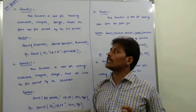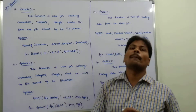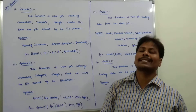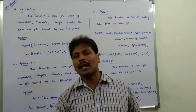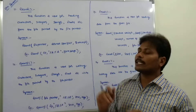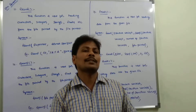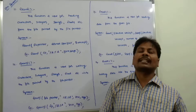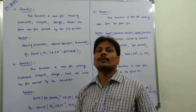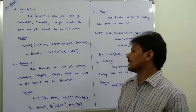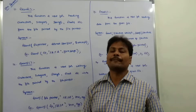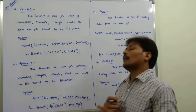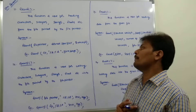Using fscanf, we read integer, character, and floating point values from the given file. Using fprintf, we print integer data, character data, and floating point data into the given file. The syntax is: fprintf(fp, format_specifier, variable_name1, variable_name2, ...).